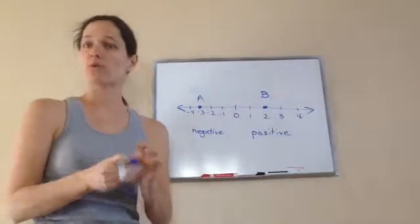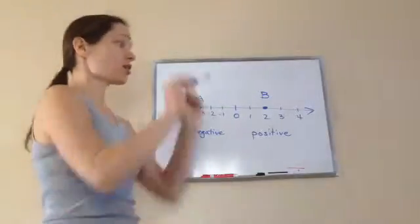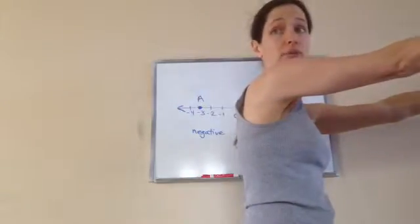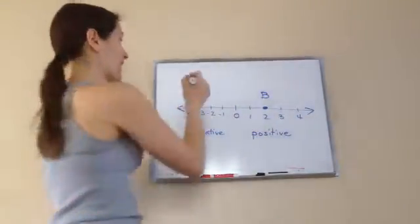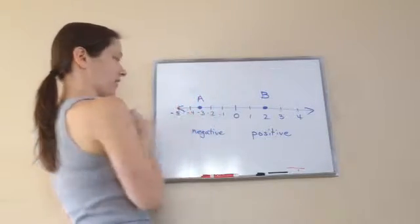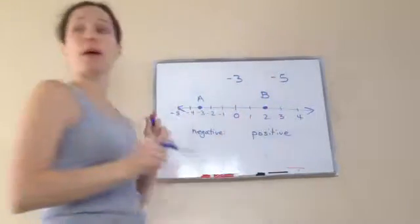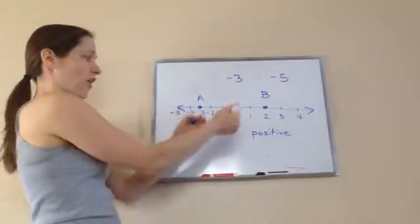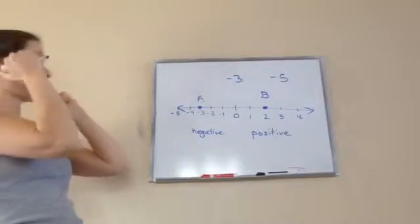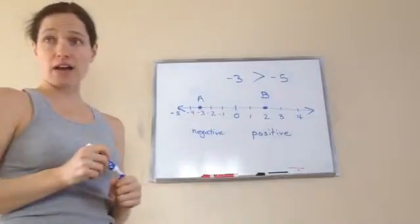If I asked you which one is bigger, what would you tell me? B. So the farther I go to the right the bigger the number gets. The farther I go to the left the smaller the number gets. So negative three is bigger than negative five. The farther I go this way it gets smaller and smaller, and this way bigger and bigger.